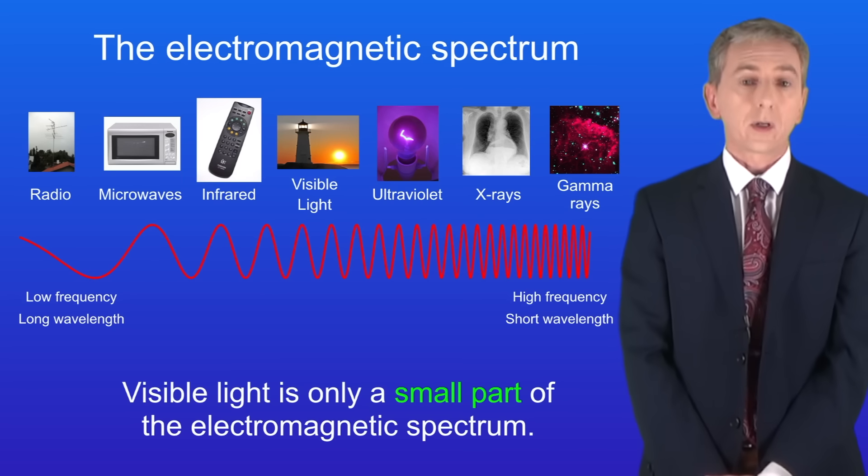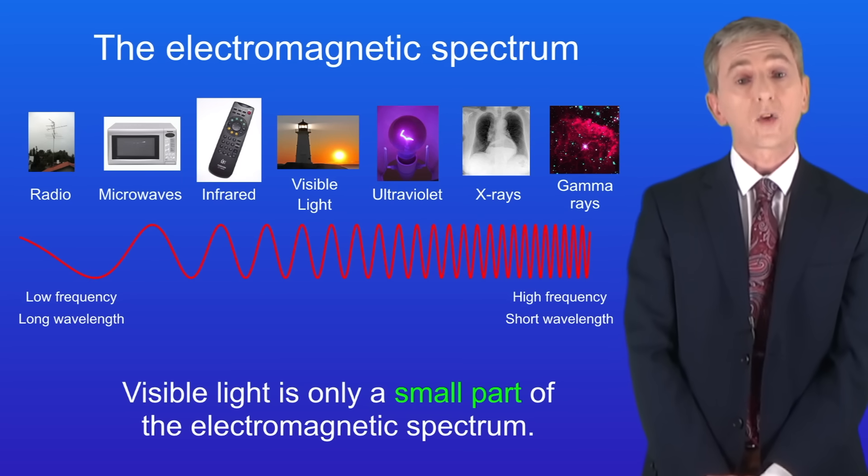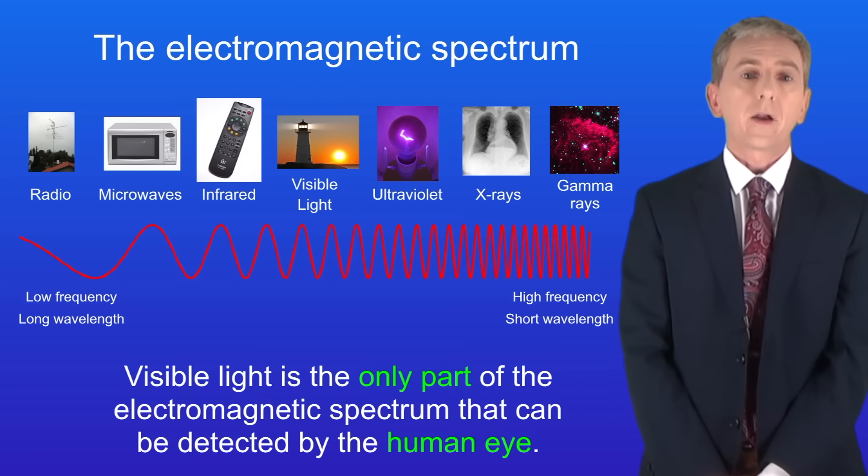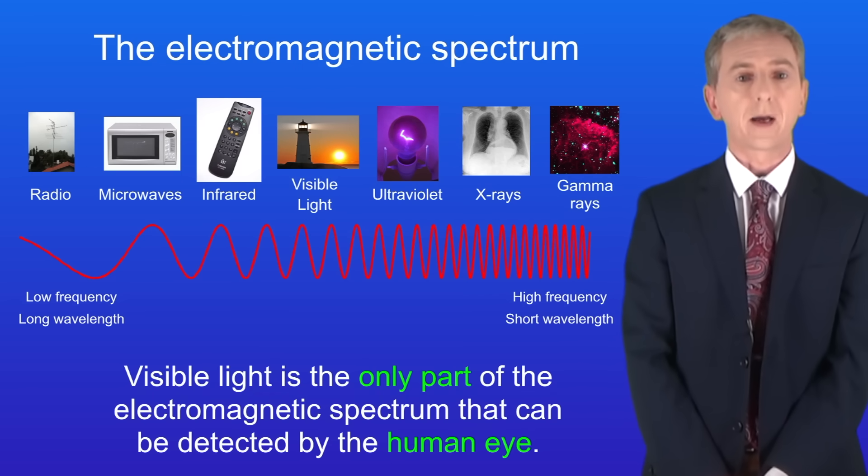Visible light is only a small part of the electromagnetic spectrum. So I'm showing you the whole spectrum here. And remember that visible light is the only part of the electromagnetic spectrum that can be detected by the human eye.